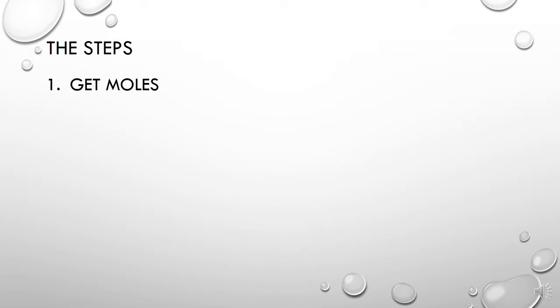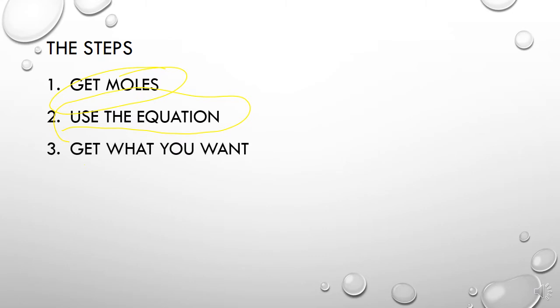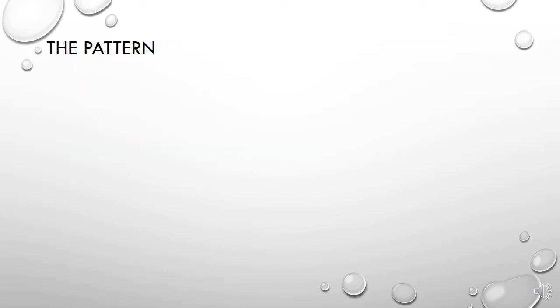First up, we have the three steps that we go through when solving a stoichiometry problem. Remember that the first one is to get moles, meaning if you have something given to you in grams or liters or molecules or atoms, you need to convert that to moles first. Second step is to use the equation, meaning use the ratios in the balanced chemical equation to do the second step. And third step is to get what you want, meaning convert it back into the units that they're asking for.